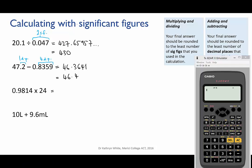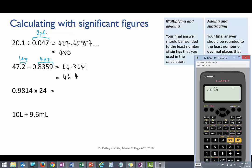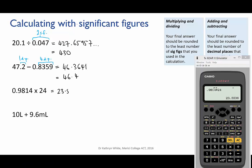Next, 0.9814 times 24. We put that into the calculator and we get 23.5536. Of the two numbers that we used, 24 has the fewest sig figs. It has two.